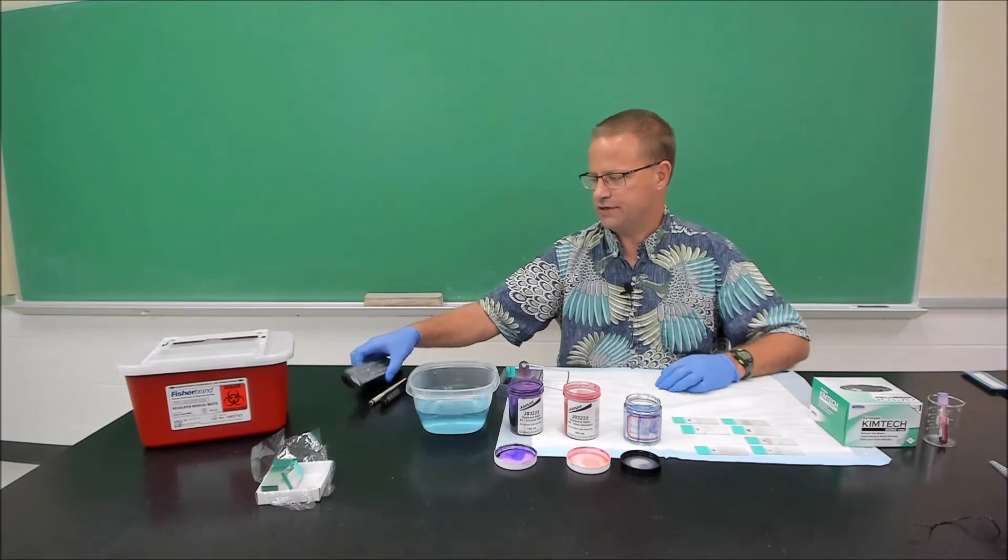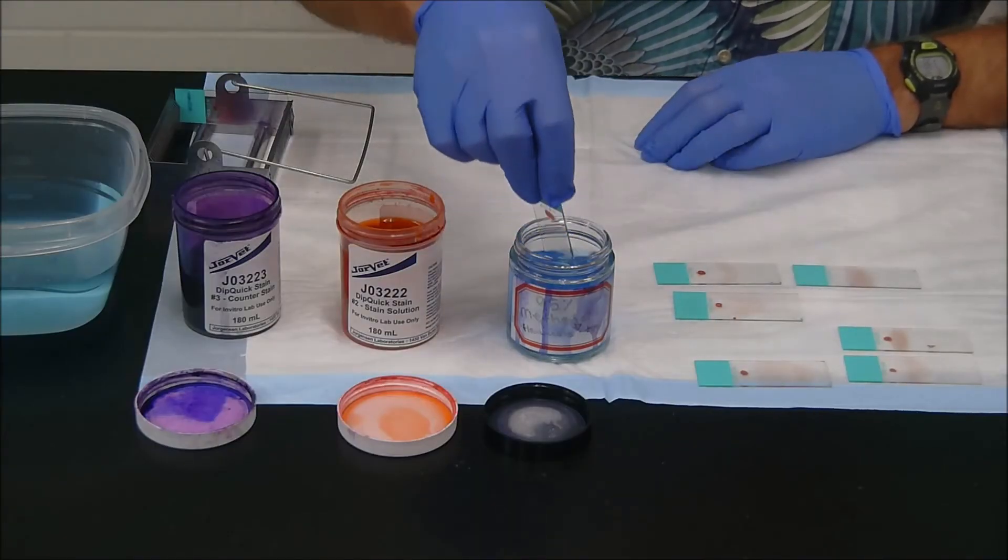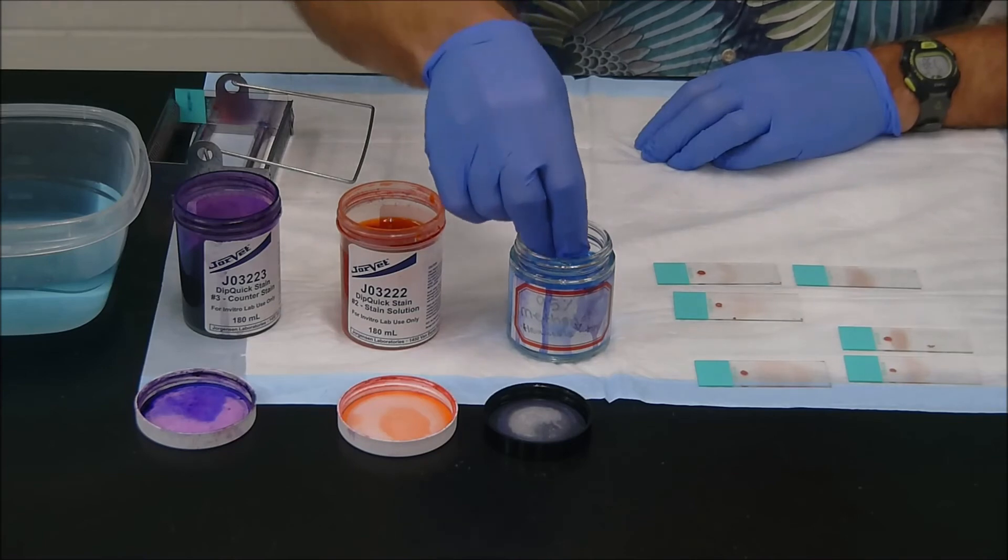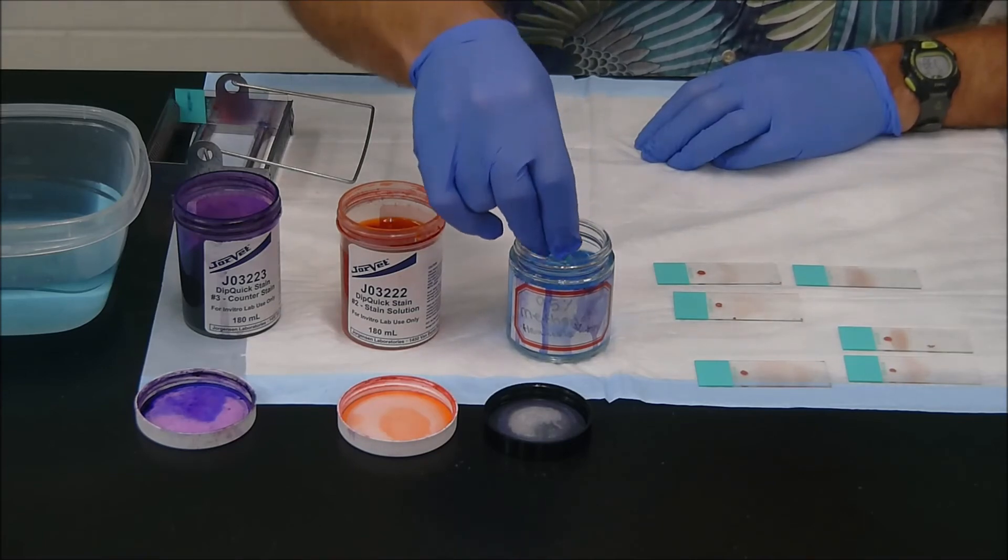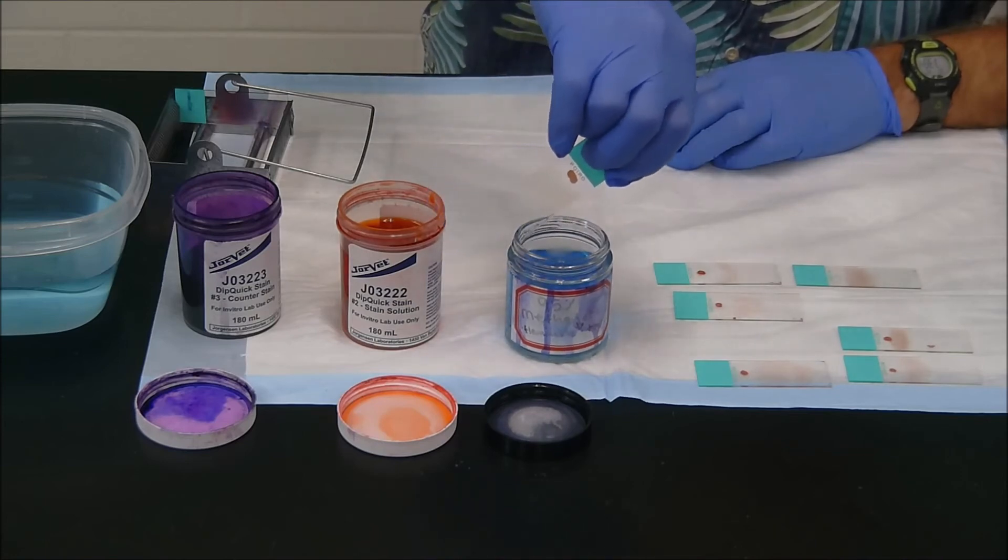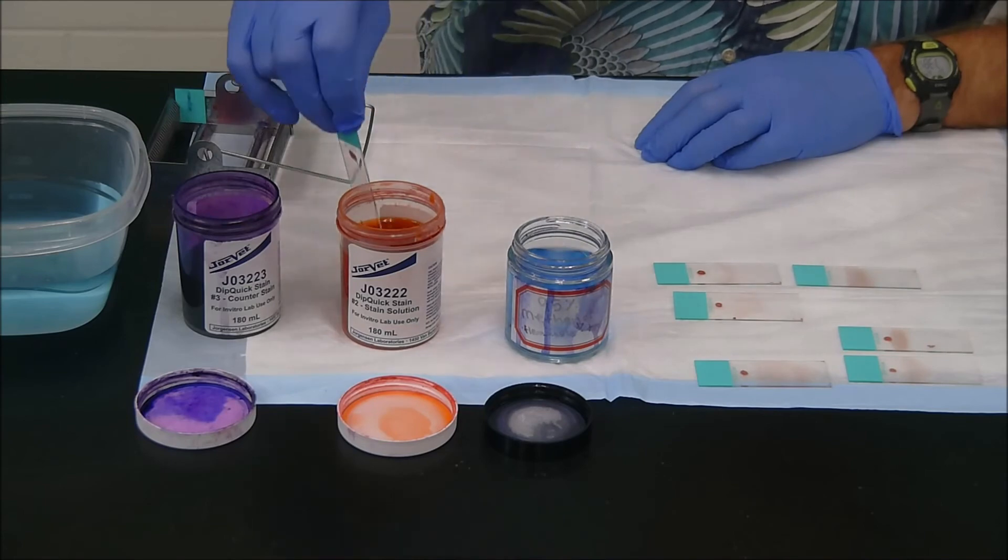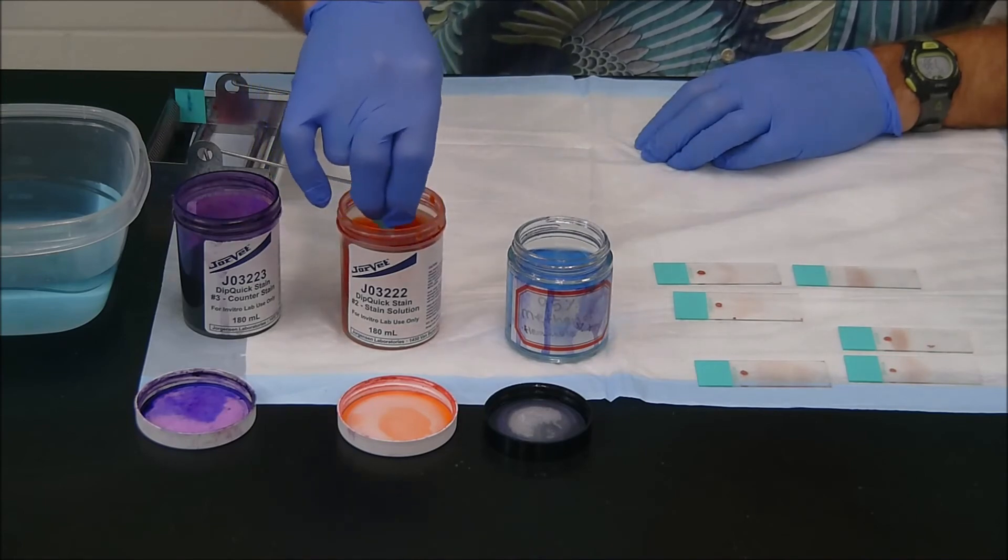Okay. Let's do another one, but zoomed in. So again, I just pick up my smear. Ten dips into the methanol. Get the excess material off there. And ten dips in the eosin. Or I can swish it in there for ten seconds. It doesn't really matter.